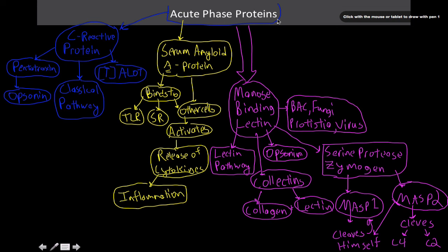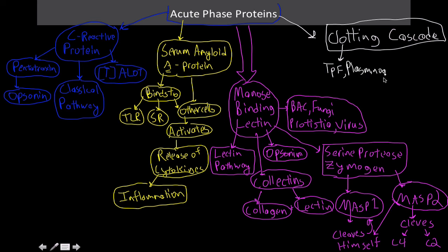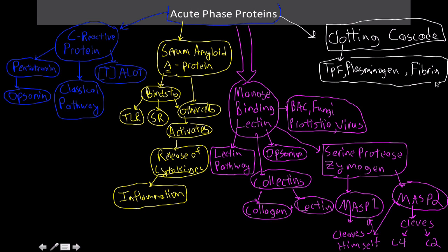The last acute phase proteins I want to mention are the proteins of the clotting cascade. It's important to know that a blood clot is being formed. Things like tissue plasminogen factor, thrombin, plasminogen — which is converted into plasmin — and fibrinogen all result in the formation of a clot. These all take place in the hepatocytes, where the acute phase proteins are secreted.